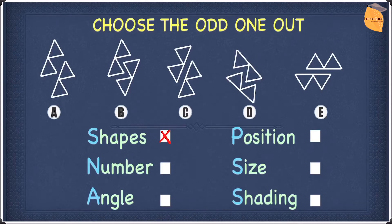Let's move on to number. All of the options above have two shapes. This means we cannot use number either. So let's go on to angle.